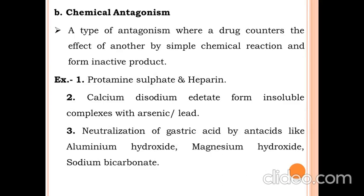The second type of antagonism is chemical antagonism — where a drug counters the effect of another by simple chemical reactions to form an inactive product. Examples: protamine sulfate and heparin; calcium disodium EDTA, which forms insoluble complexes with arsenic and lead ions; and neutralization of gastric acid by antacids such as aluminum hydroxide, magnesium hydroxide, and sodium bicarbonate. This is a type of chemical antagonism.